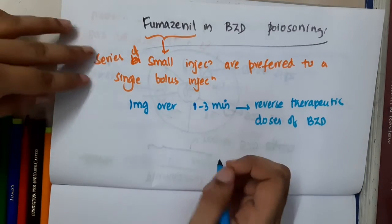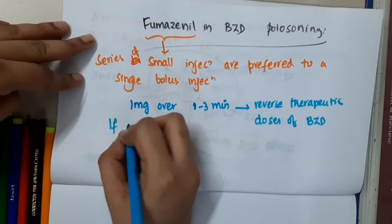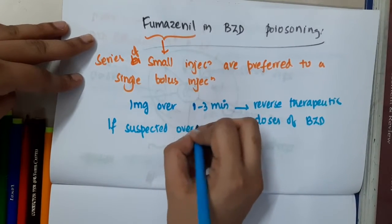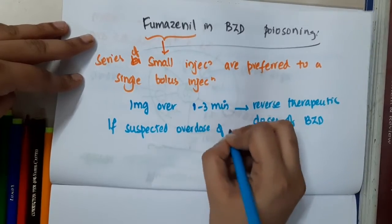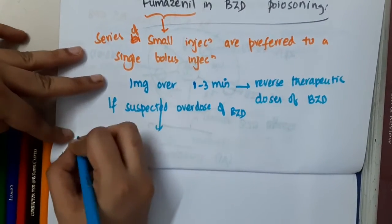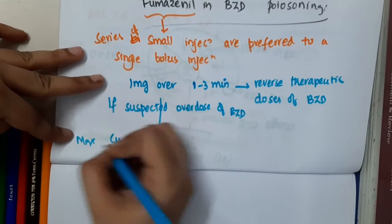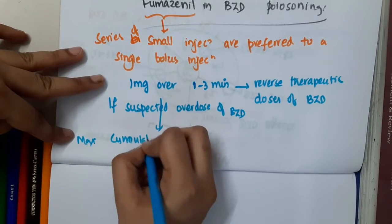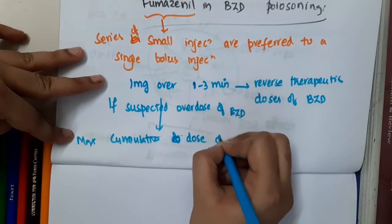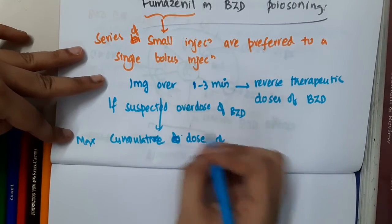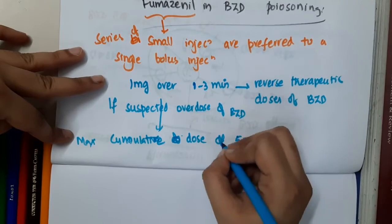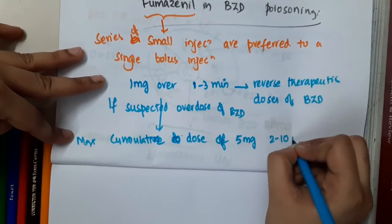Now, if there is suspected overdose of benzodiazepines, then you can increase this dosage. You can give a maximum cumulative dose of around 5 mg given in 2 to 10 minutes.